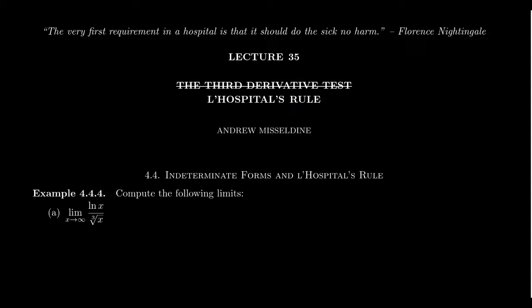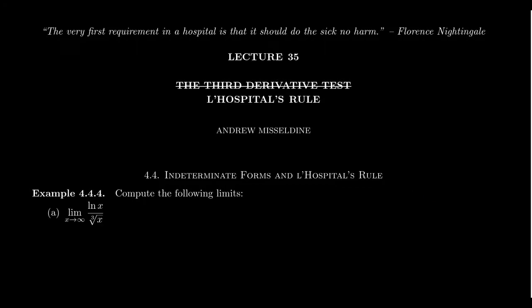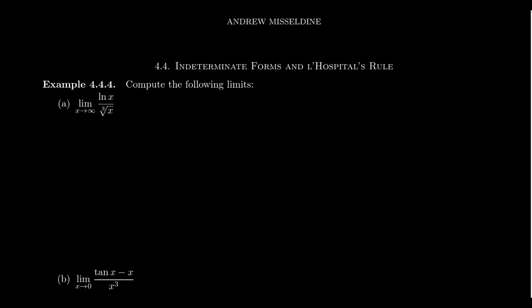L'Hôpital's rule applies only when we have a limit of the form zero over zero or infinity over infinity. If we have one of these indeterminate forms, we can take the derivative of the numerator and the denominator of the function in the limit and then reevaluate the limit. If this limit turns out to be a number, that was the original limit. If it doesn't exist, that was the original limit as well.